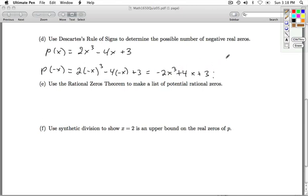And so, the variations in sign here in P of negative x, it's negative, positive, positive, which means I have only one variation in sign. So, that means that I have exactly one negative real zero.